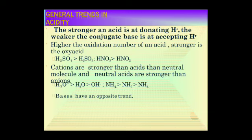General trends in acidity: the stronger an acid, the better it donates H⁺ ions. A higher oxidation number of the central atom in oxo-acids makes the acid stronger — for example, sulfuric acid and nitric acid. Additionally, cationic acids are stronger than neutral molecules, and neutral acids are stronger than anionic acids.